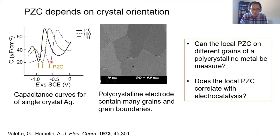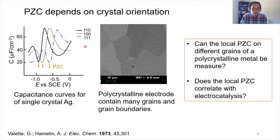The PZC has been measured by different methods. One of them is called the capacitance or differential capacitance curves. Pioneered by Hamling, what they found is that the differential capacitance curves of single crystal silver actually depend on the crystal orientation of the silver. The minimum on this capacitance curve corresponds to the potential of zero charge. So depending on the crystal orientations, the potential of zero charge can vary quite significantly. In this example of silver, there is about 0.4 volts of variation in the PZC just because of different crystal orientations, and those are single crystal measurements.